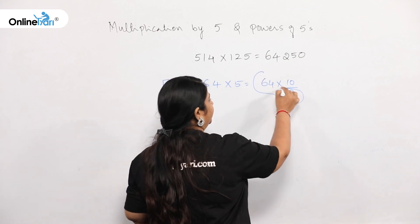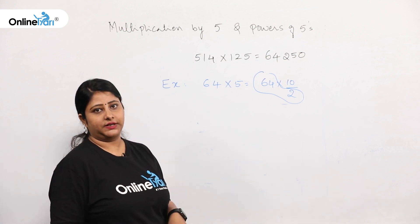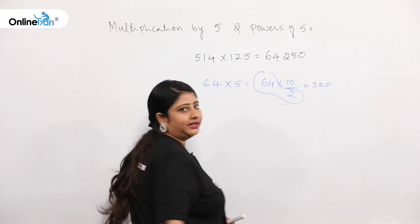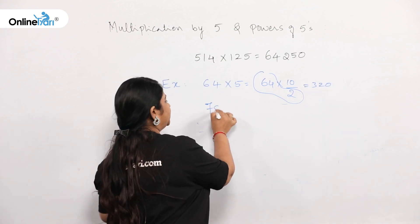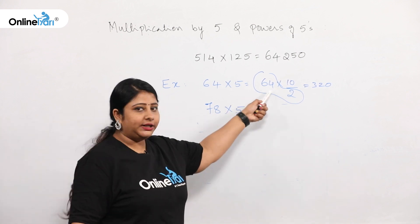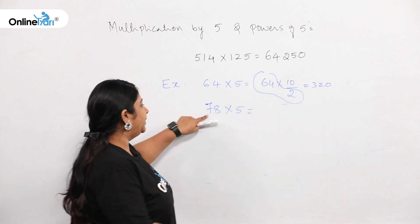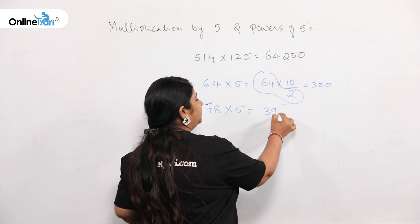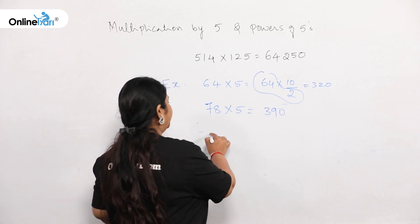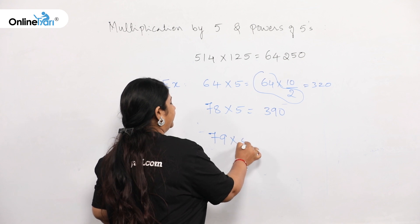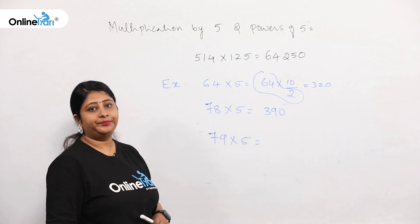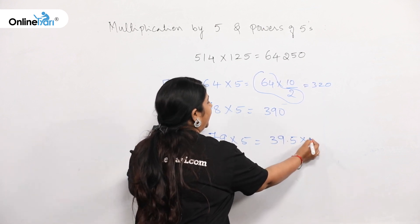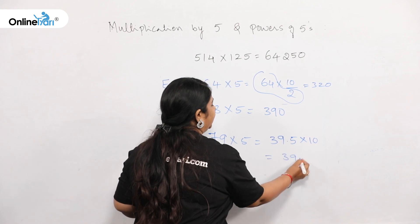So you can observe the pattern: 64 divided by 2 is half of 64, which is 32, and 32 × 10 = 320. Let me give one more: 78 × 5. Half of 78 is 39, and 39 × 10 = 390. Similarly, 79 × 5 — half of 79 is 39.5, and 39.5 × 10 = 395.